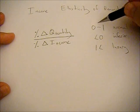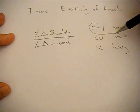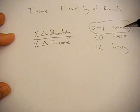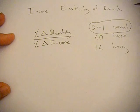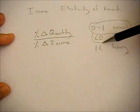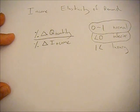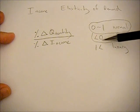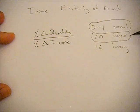Remember, if your income goes up and you consume a little bit more of the good, it's normal—that's how we would expect most goods to behave. If your income goes up and you consume less of the good, meaning the elasticity is negative, it's inferior. You don't like that good; as you get more money you're going to buy less of it.